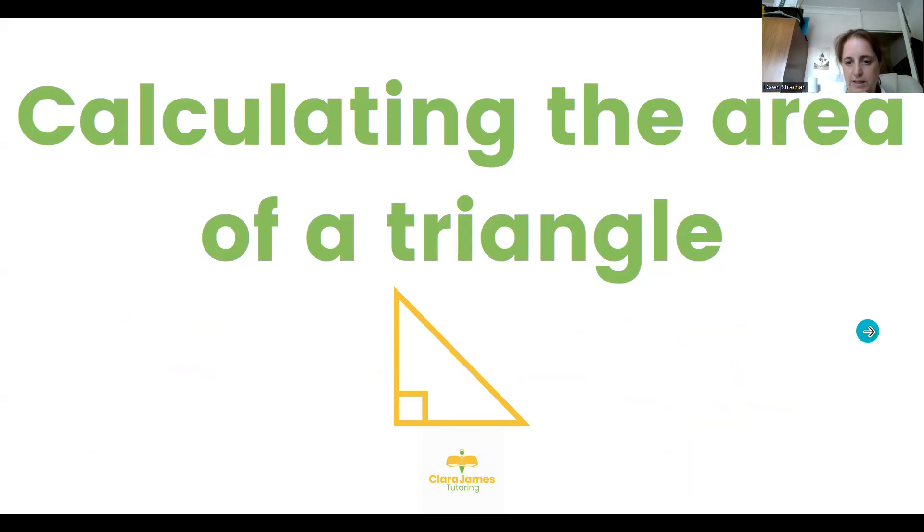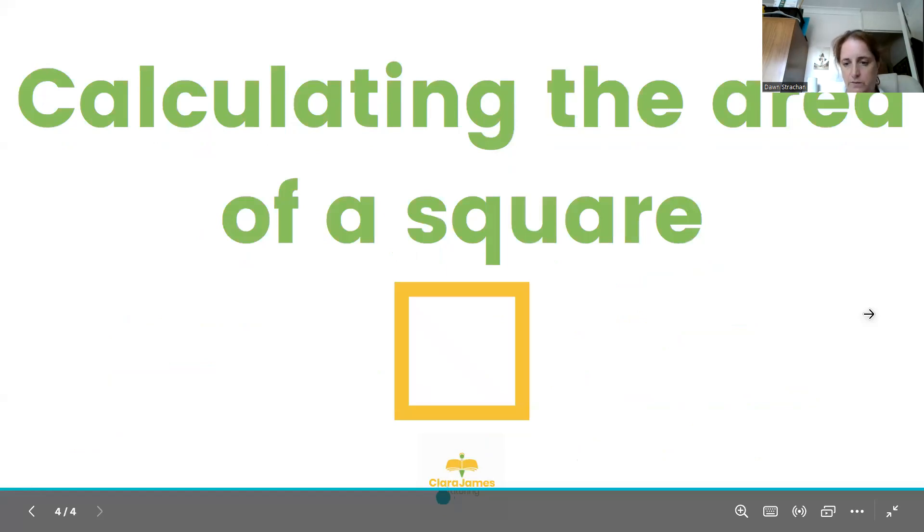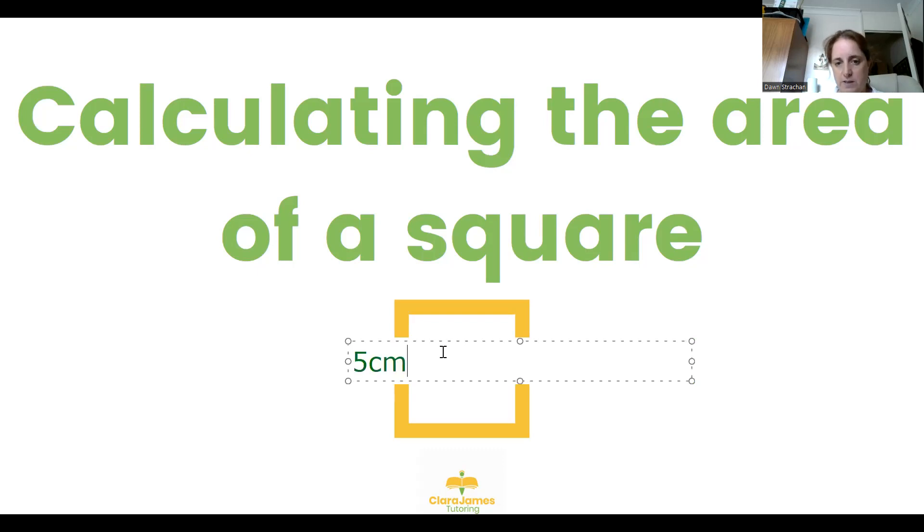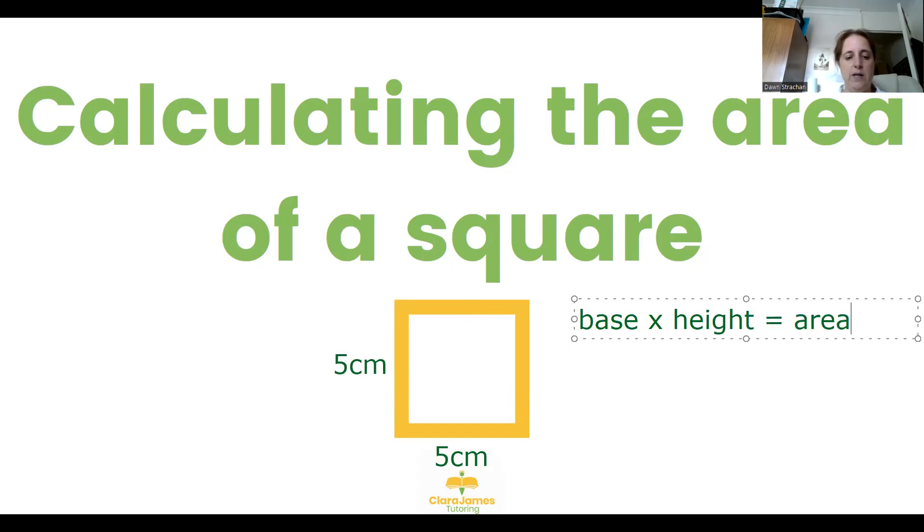And then moving on to the next one, the last one. The area of the square is potentially the easiest but also potentially the hardest. Every side of our square is always the same. So if I tell you that this side here is 5 centimeters, that means every side is going to be 5 centimeters. If we're asked to work out the area of the square, once again it's base times height. So in this instance it's going to be 5 times 5, which would give us an area of 25 centimeters squared.